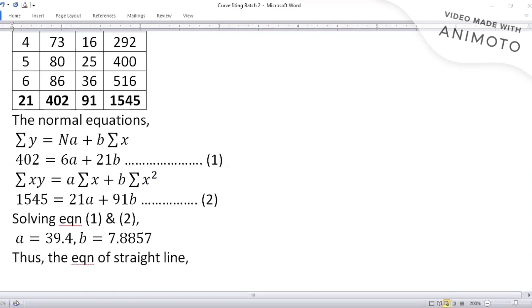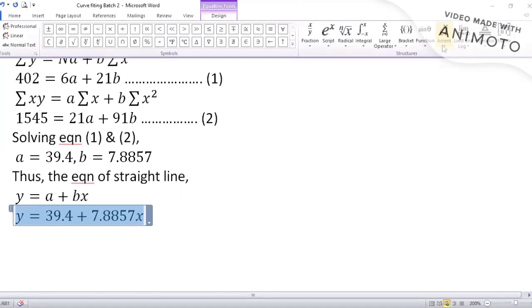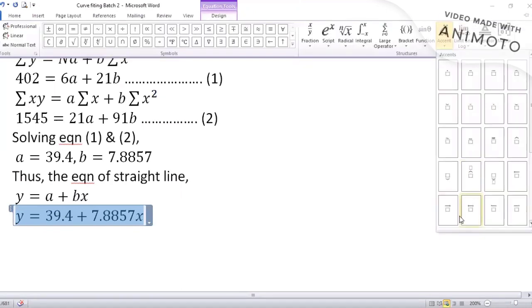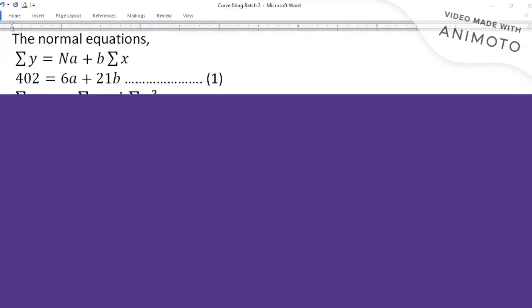The equation of straight line formula was y equal to a plus bx. In this you substitute y equal to a value 39.4 plus b value 7.8857 and x. This is the answer. I will highlight this here. This is the straight line equation. Fit a straight line.